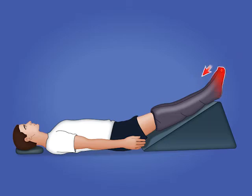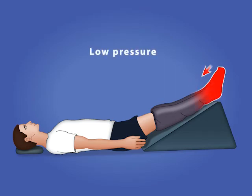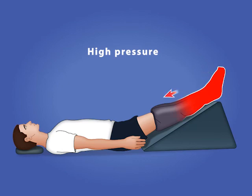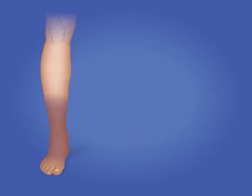Venous return will be directly proportionate to the pressure gradient applied to the limb. Sequential compression set at lower pressure will cause absorption at a slower rate. Increasing the pressure gradient with a high pressure setting using sequential compression creates a high pressure gradient distally and a lower pressure gradient proximally. Thus, fluid can move from a high pressure area to a low pressure area, allowing for increased lymphatic drainage.